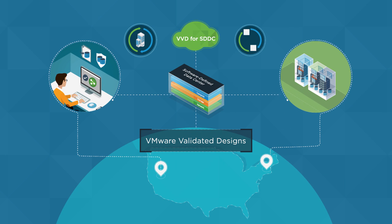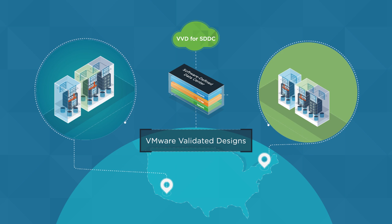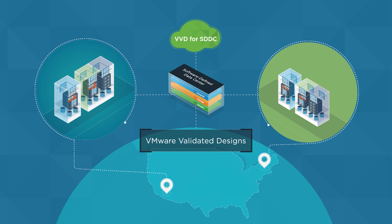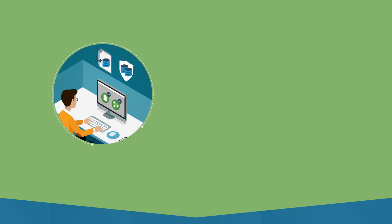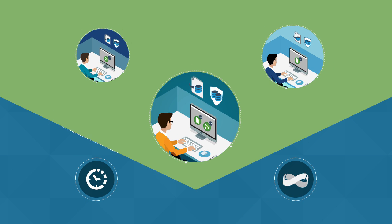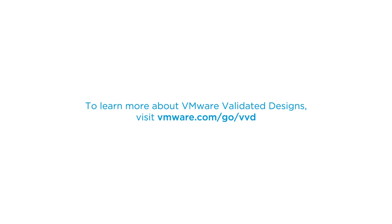Business continuity and disaster recovery are essential for the modern data center. The dual region model of the VMware validated design for software-defined data center extends the SDDC across geographic regions. This protects against catastrophic events and ensures that IT delivers the availability and resiliency required to support the most critical applications and workloads. To learn more about VMware validated designs, visit vmware.com/go/vvd.